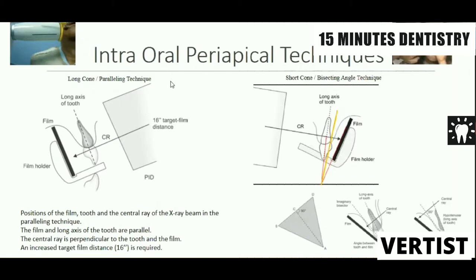Though the long cone technique follows all the rules of projection geometry, we still use the bisecting angle technique regularly everywhere. The reason is that the long cone is 16 inches long — that is too large. We need a lot of space, and in many settings space is constrained, so the bisecting angle technique is more comfortable to use.